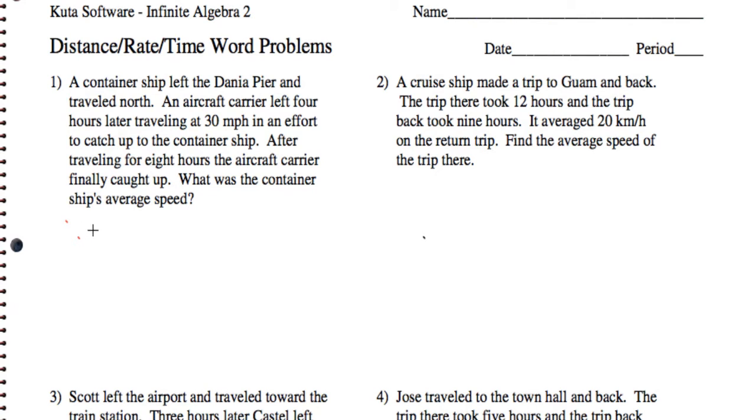So we have two ships. We have an aircraft carrier and we have a container ship. So let's be clear. The container ship first travels for four hours, and then what happens is eight hours later, the aircraft carrier catches up to it.